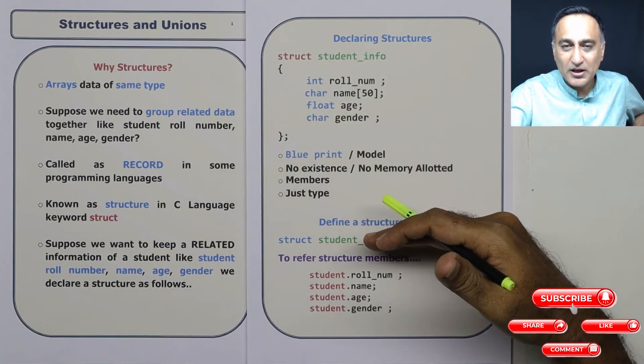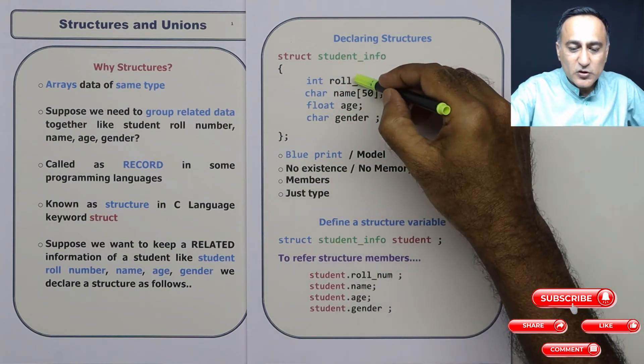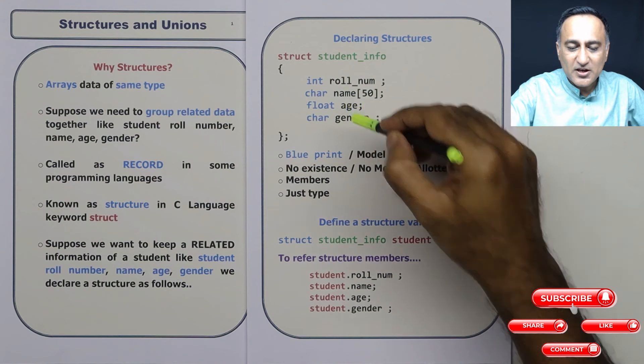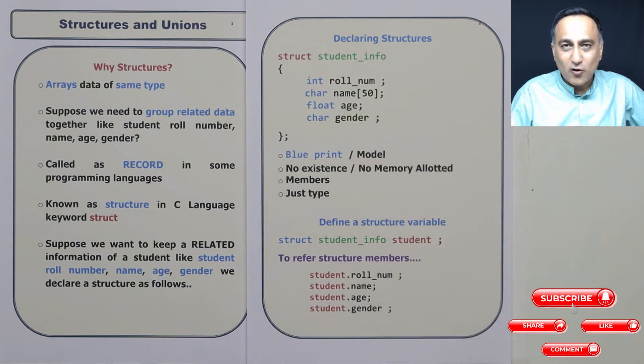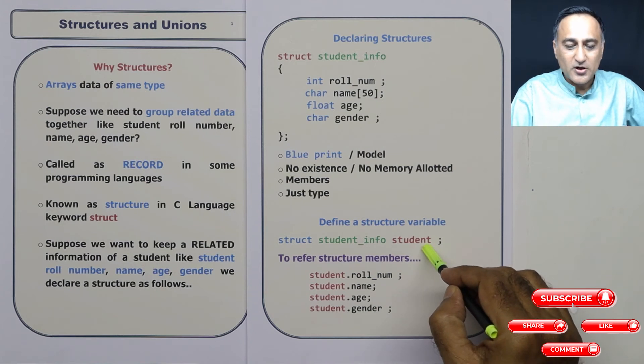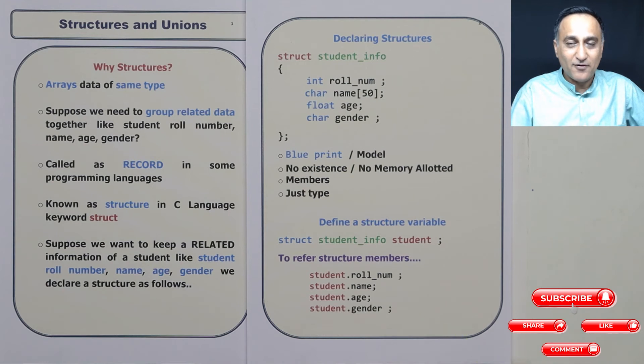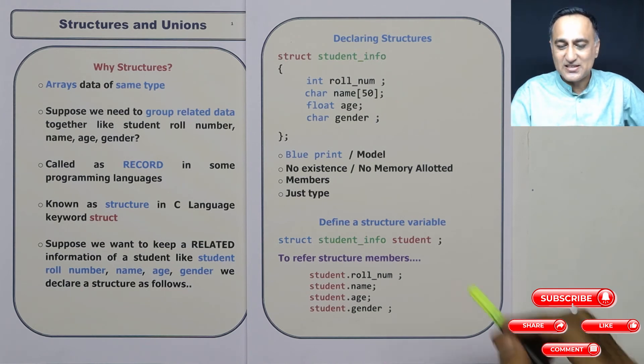So the moral of the story here is, this is a blueprint or a model, this is an actual variable of this particular blueprint. And individually, these names role number, age, gender don't mean anything. They are always associated with this particular structure called as student. So to refer to age, I will always have to say student dot age. If I try to say print age, the compiler will flag an error. Because age on its own does not have any existence. Age has existence only because of student.